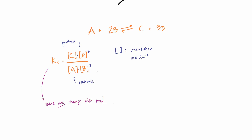That's very important. Changing concentrations doesn't change the value of KC — the equilibrium shifts and fixes itself up. Changing pressure doesn't matter either. Only temperature changes the value of KC. You'll often be given a constant at a particular temperature, for example at 298 Kelvin.